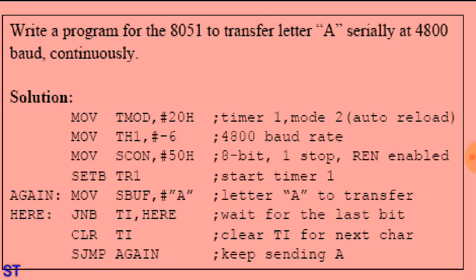Here is a program to transmit the letter 'A' serially at 4800 baud continuously. The first instruction is MOV TMOD, #20H, which selects Timer 1 in Mode 2 — auto-reload mode — used to set the baud rate.